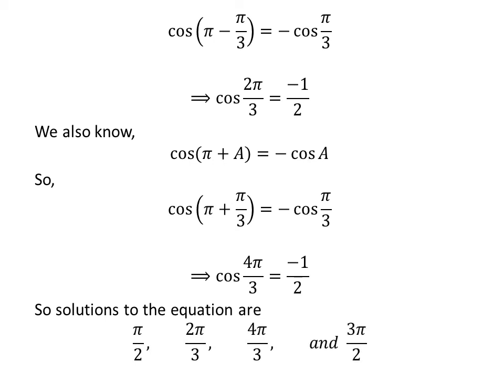So, the solutions of the equation 2 times sine squared of x is equal to 2 plus cosine of x, in the interval 0 to 2π, are: π/2, 2π/3, 4π/3, and 3π/2.